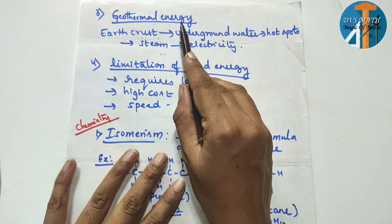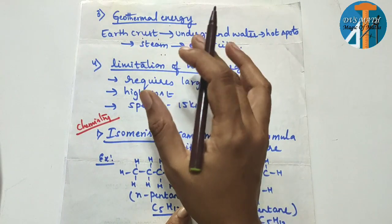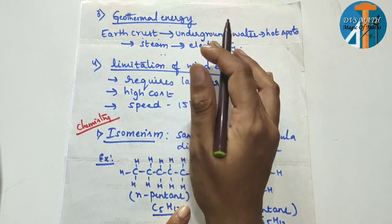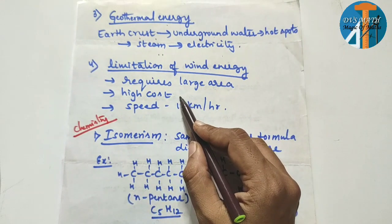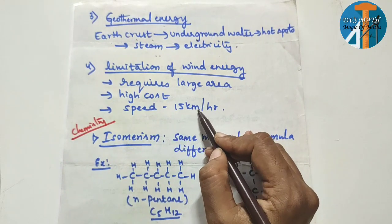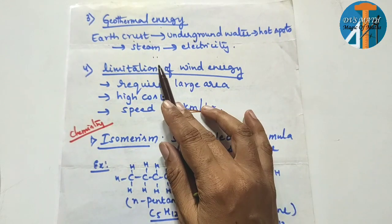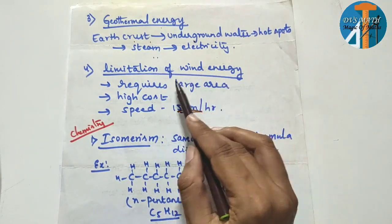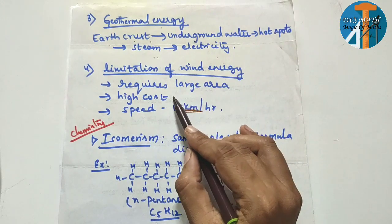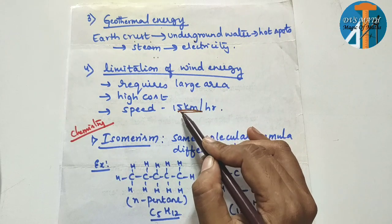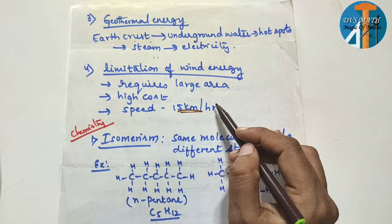Next question: limitation of wind energy. Wind turbines require a large area. It requires large area. High cost. Wind turbines need a minimum speed of 15 km/h. These are the limitations — or disadvantages — of wind energy.